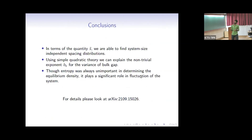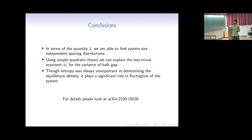In conclusion, in terms of the quantity S tilde, we are able to find the system-size-independent spacing distribution. Using simple quadratic theory, we can explain the non-trivial exponent b_k for the variance of the bulk gap. The entropy term was dominating in the curved part, which is obtained from the field theory technique. Thank you.